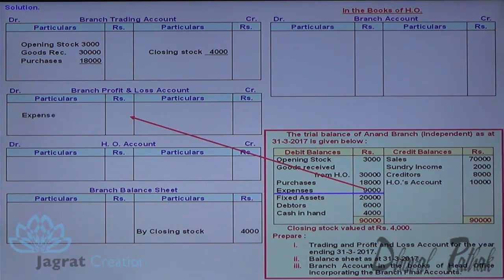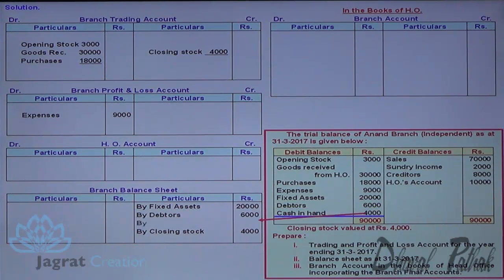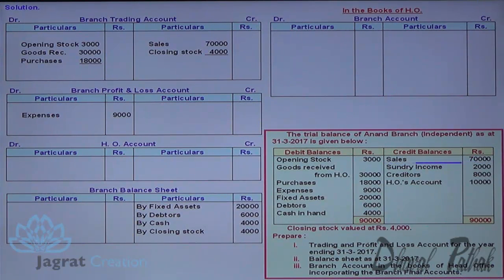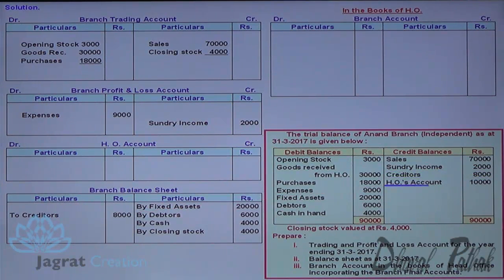Expenses incurred by the branch are debited to profit and loss account. Fixed assets will appear on the asset side. Debtors on the asset side. Cash in hand on the asset side. Sales go to trading account credit side. Sundry income goes to profit and loss account credit side. Creditors go to the balance sheet liability side.